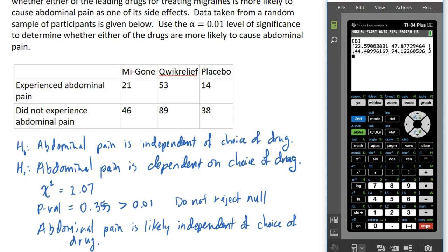So, that's just a couple examples of how a test for independence works.